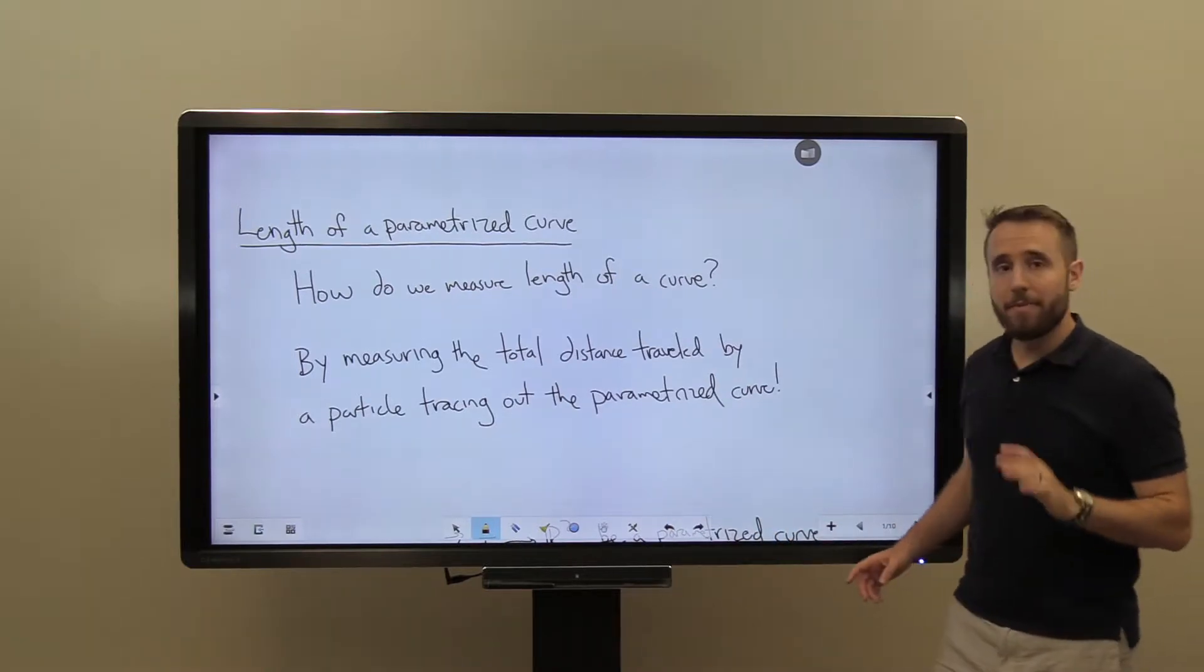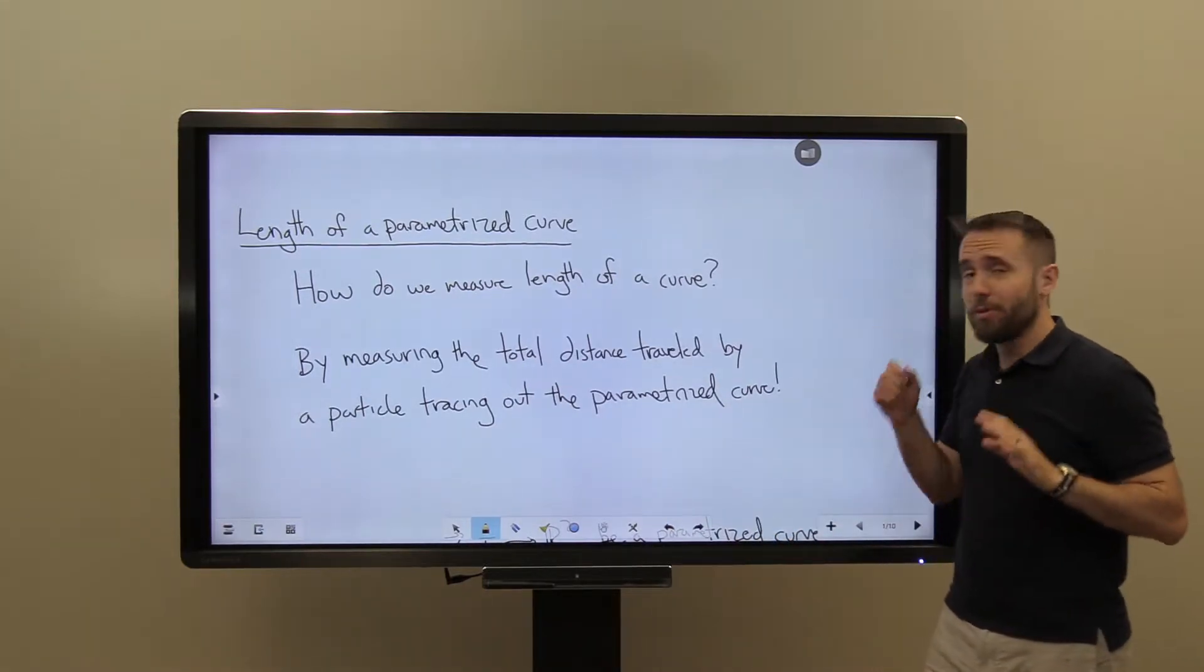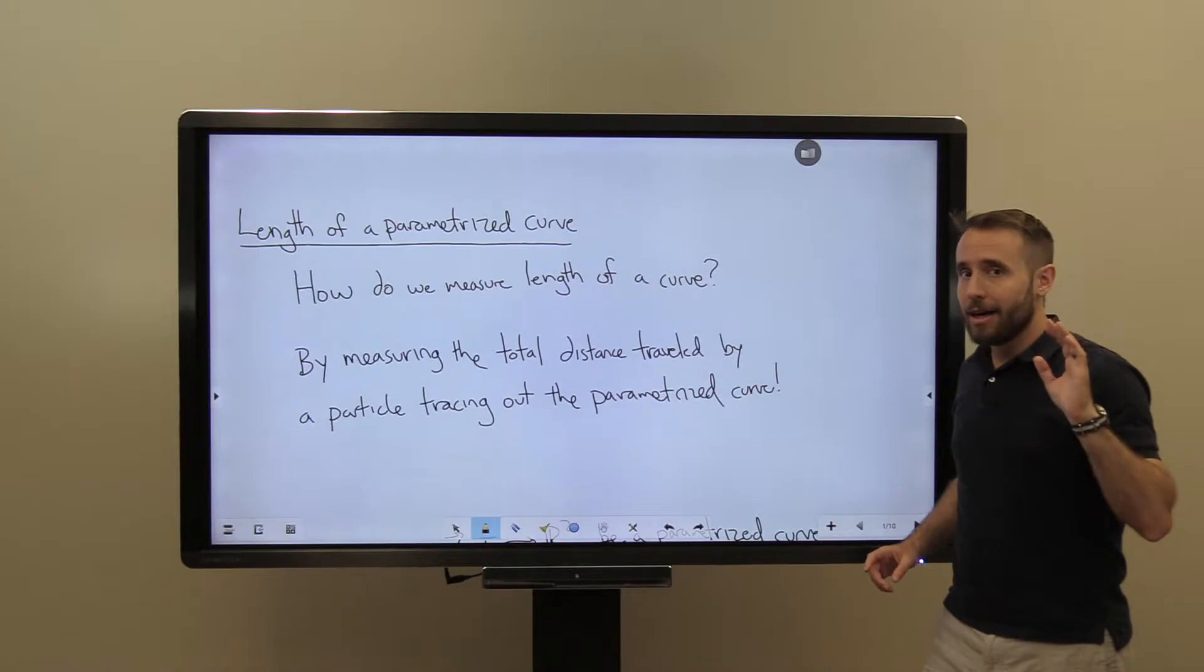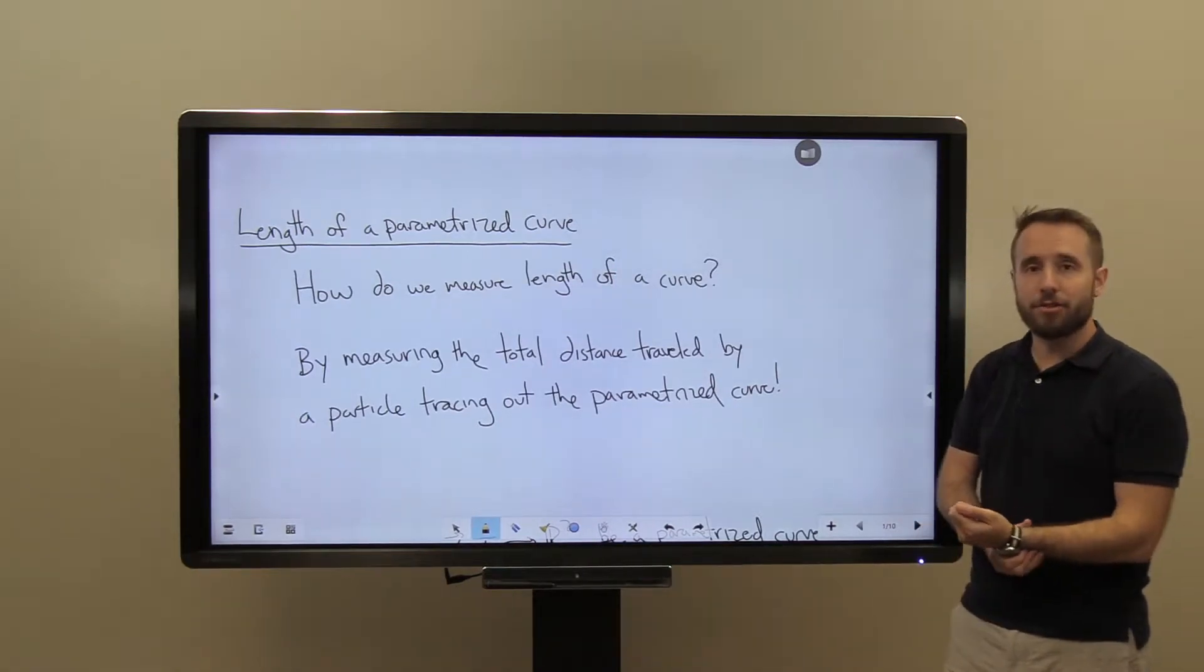Okay, so how do we measure the total arc length? By measuring the total distance traveled by the particle. And how do we measure total distance traveled?